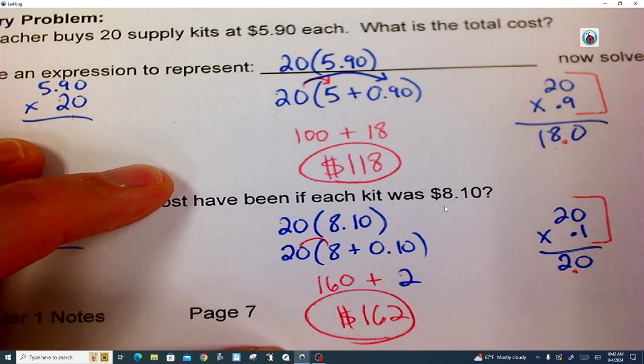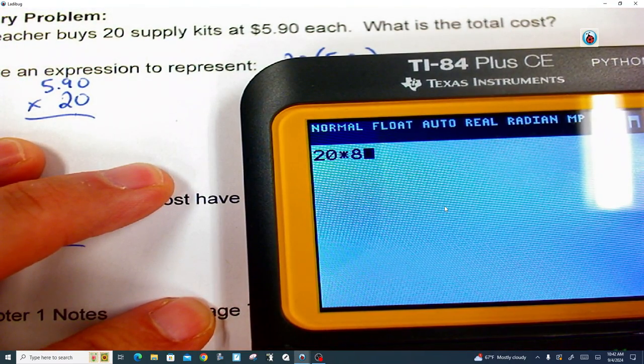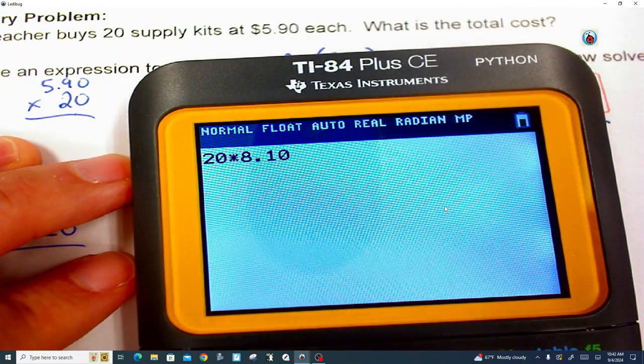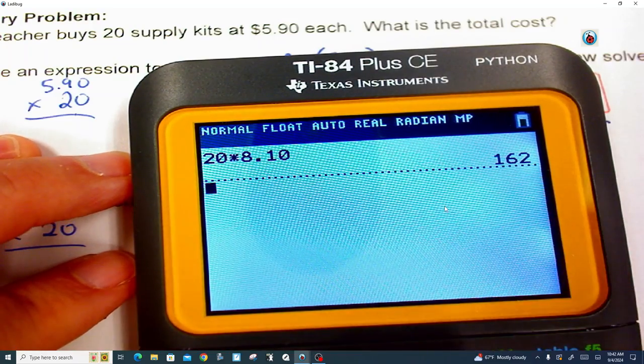And let's just pull this one up right here. Let's just check it on our calculator here. What is 20 times $8.10? And you don't have to put that zero on the end of it, but a lot of people do. And there it is. It's $162.